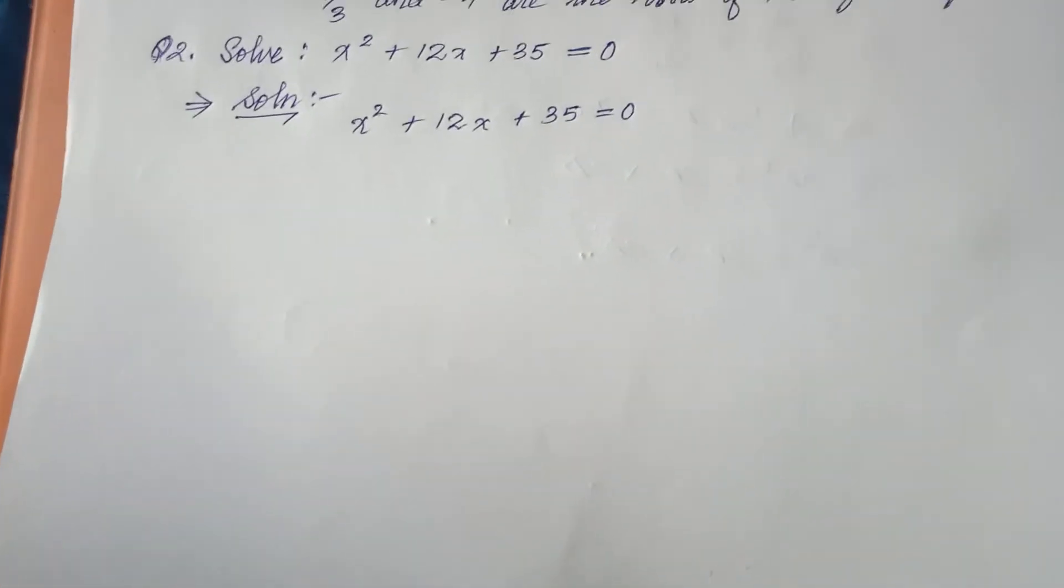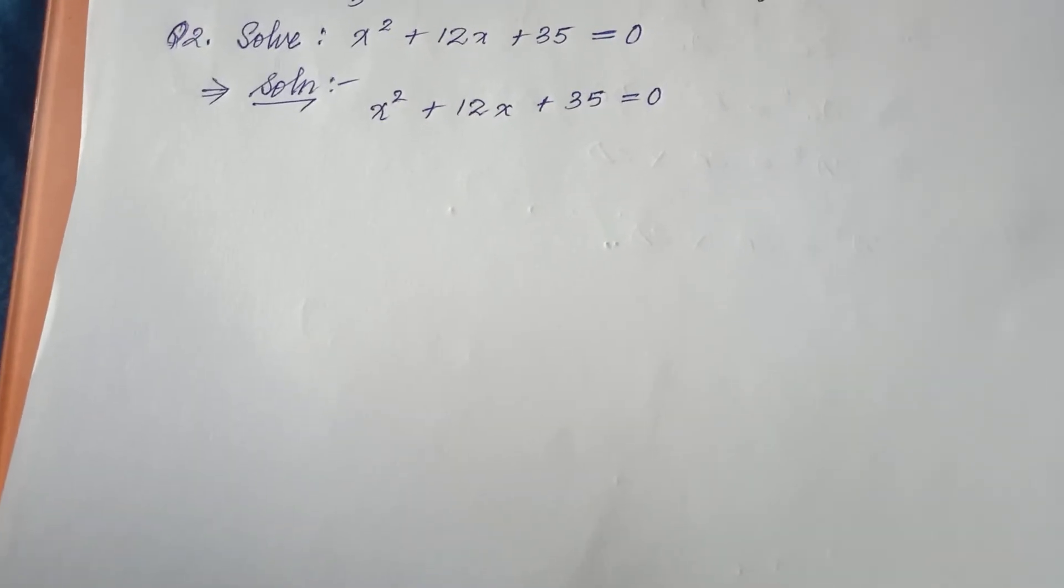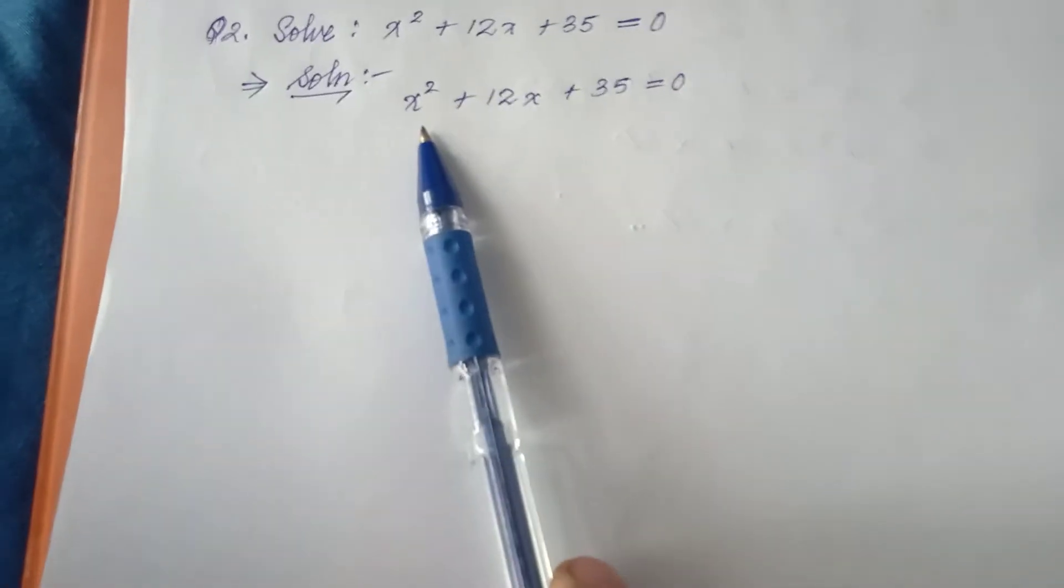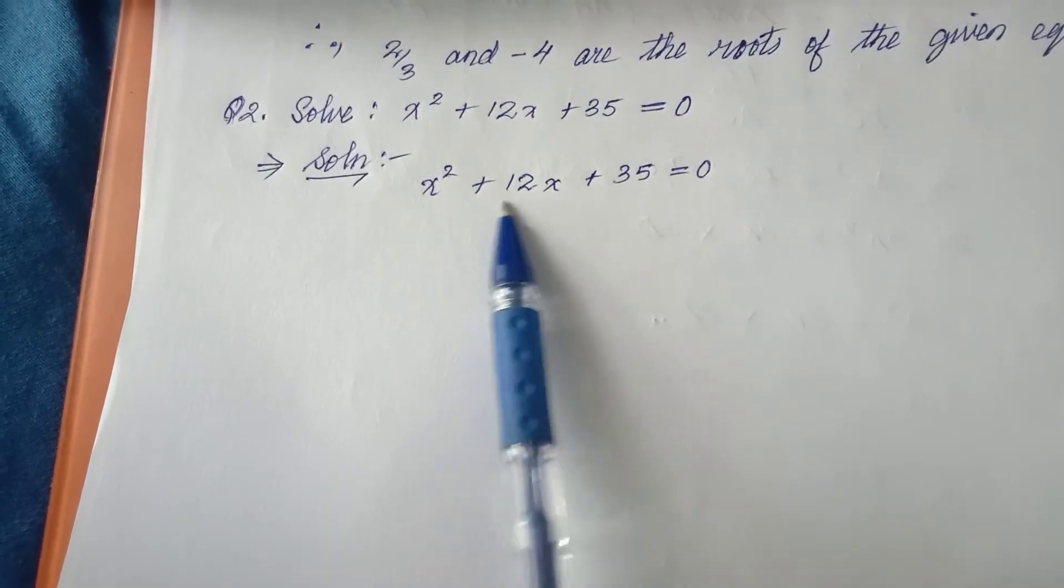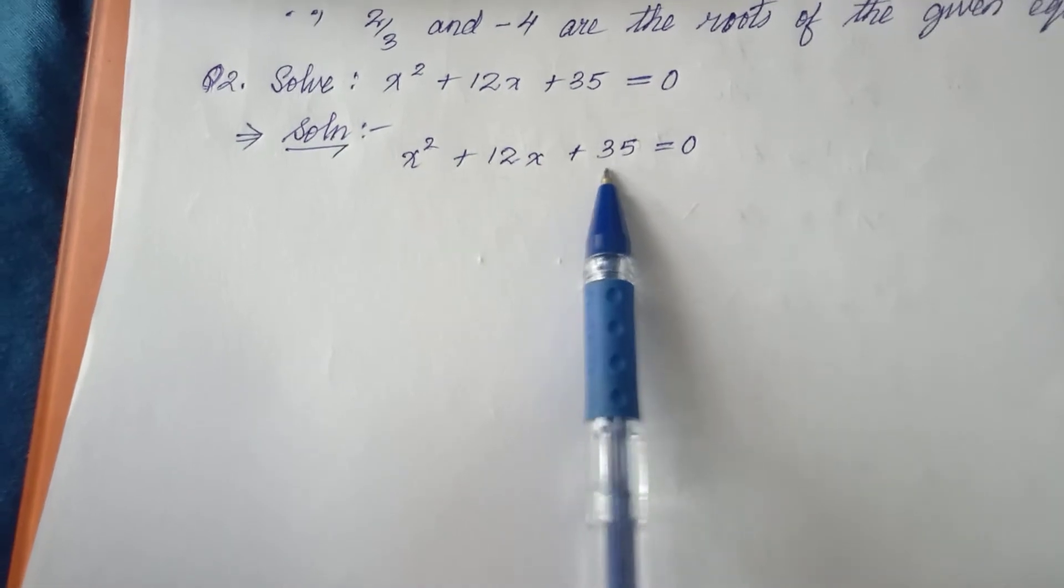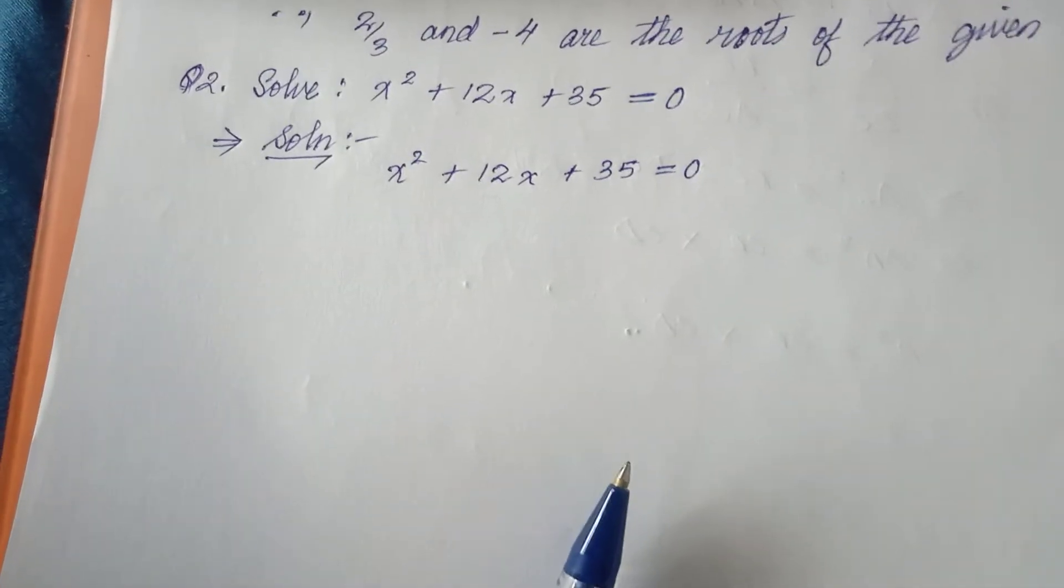Okay, now we will continue with quadratic equations, or we can say polynomials. This type of equation is called polynomials. The coefficient of x² is 1, the coefficient of x is 12, and the constant term is 35. We're finding the zeros of the polynomial.